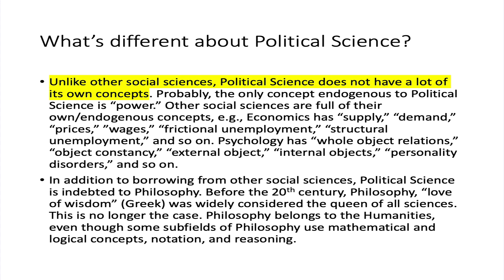In psychology, you have whole object relations, object constancy, external objects, internal objects, personality disorders, and so on. Political science is very sparse on its own concepts. Instead, what it does is borrow from other social sciences — it's like the mixed martial arts of social sciences, whereby mixed martial arts borrow techniques from all the various styles. Political science borrows concepts from other social sciences in order to convert them into an effective way of studying power.